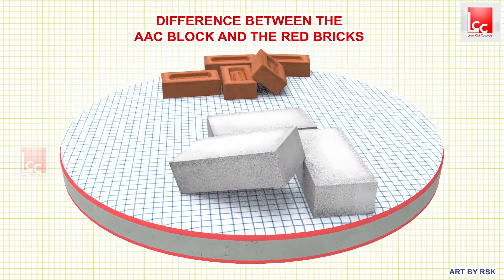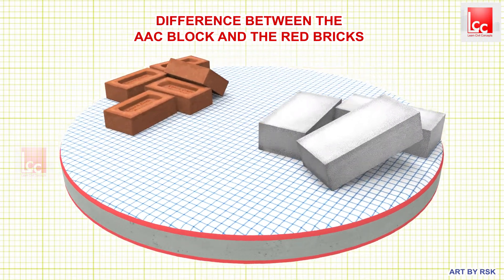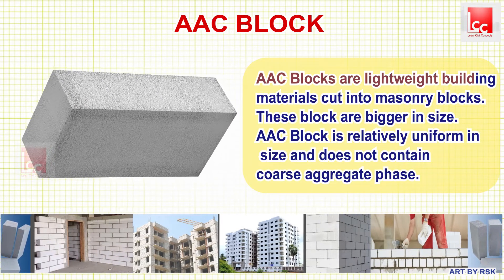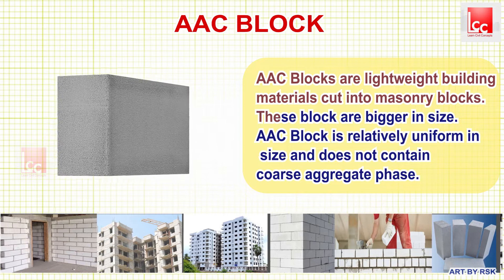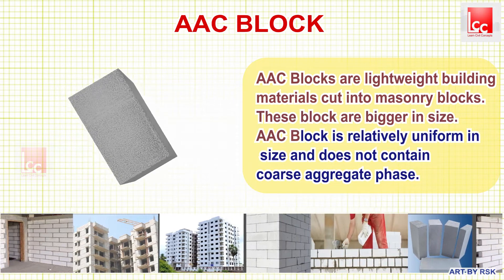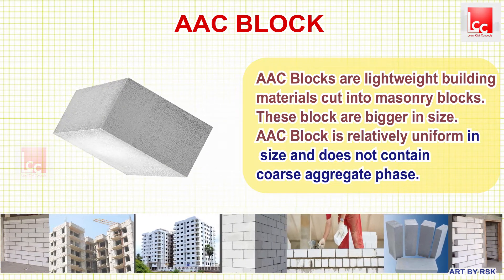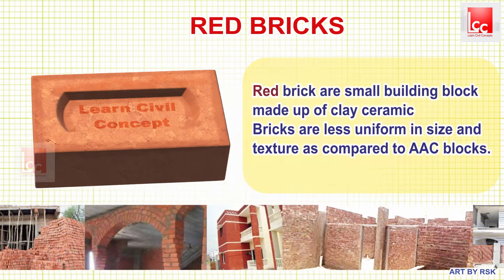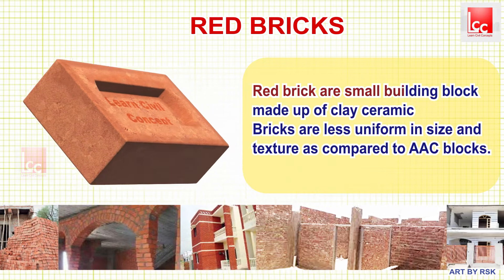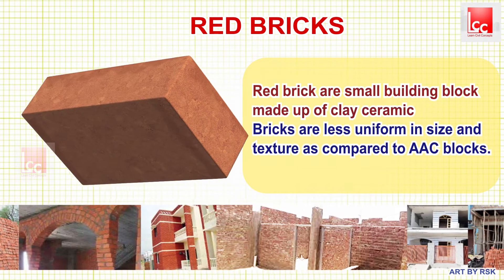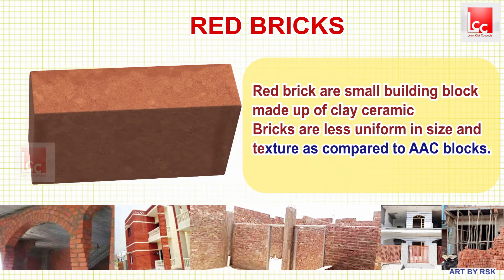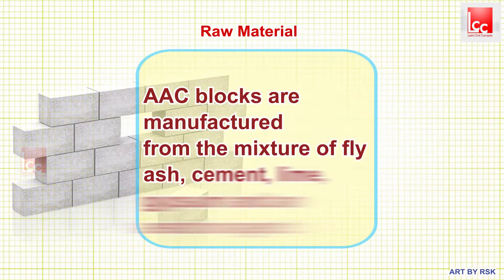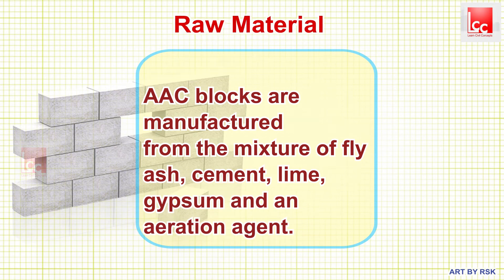Now we will understand the basic difference between the AAC block and the red bricks or clay bricks. Generally, AAC block is a lightweight building material cut into masonry blocks. These blocks are bigger in size, relatively uniform in size, and do not contain coarse aggregate. Whereas red bricks are small building blocks made up of clay; ceramic bricks are less uniform in size and texture compared to AAC block.